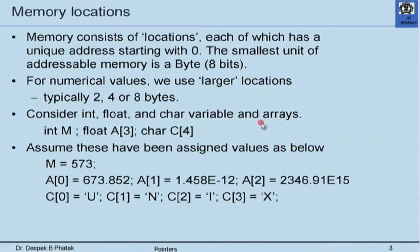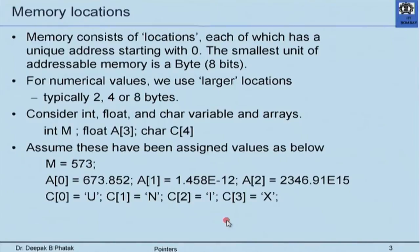Consider int, float, and char variable types and arrays: a declaration int m, float a[3], char c[4]. Assume values 573 assigned to m, 673.852 to a[0], a very small value to a[1], a very large value to a[2], and individual characters U, N, I, X assigned to c[0], c[1], c[2], c[3]. Note this is not a string, so don't look for a backslash zero — these are arbitrary assignments to demonstrate the notion of a pointer.